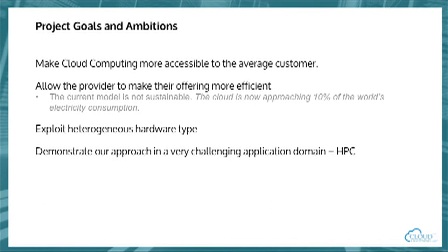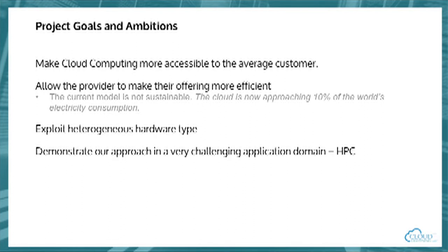The goals and objectives of the Cloud Lightning project are to try to make cloud computing more accessible to the average customer — to make it easier so the customer doesn't have to be an expert or know everything about every provider. We also want to make the provider's offering more efficient. Currently the cloud is consuming about 10% of the world's electricity, which is an enormous amount and it's set to get bigger. So providers are really focused on reducing their electricity costs, but they find that very difficult to do in an IaaS model.